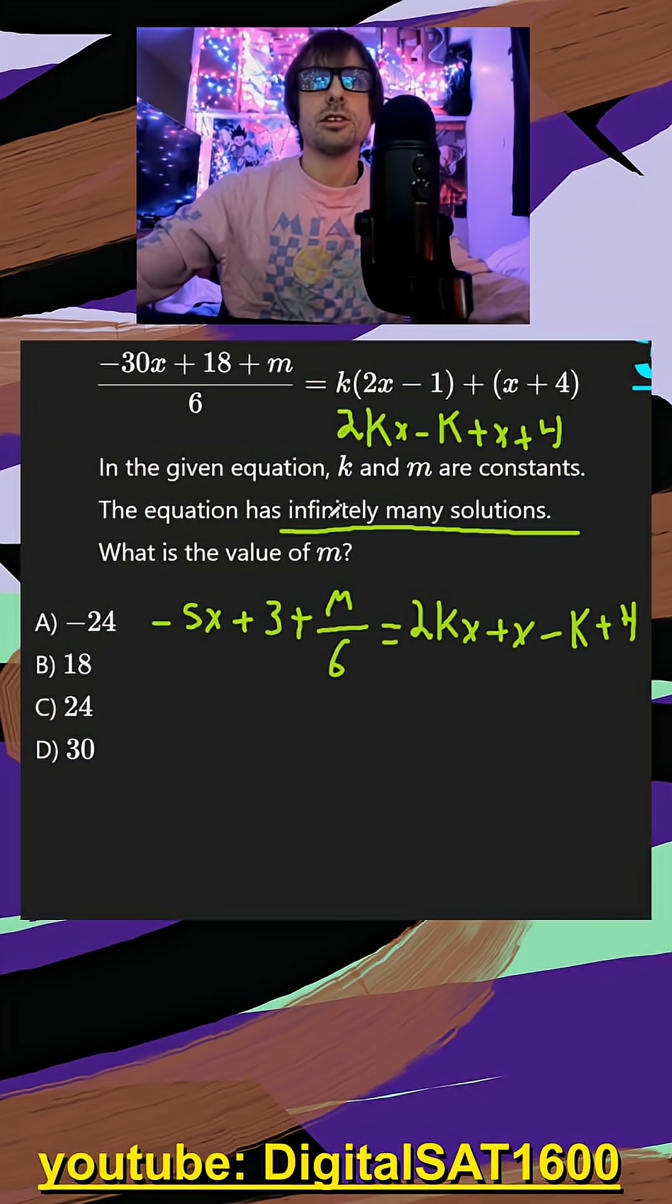And then we can start with our slopes. So my slope of my first equation is negative 5. My slope of my second equation, we have to factor the x out. So if I factor this x out, it's going to be 2k plus 1.